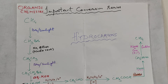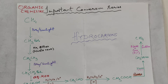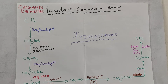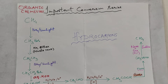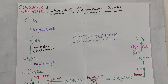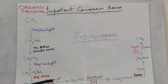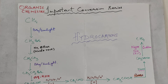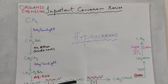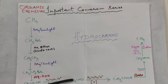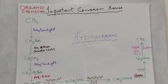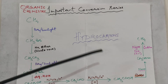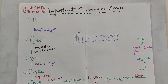Bromoethane is treated with aqueous KOH to give ethanol. Ethanol is oxidized to give acetaldehyde, and acetaldehyde is further oxidized to give acetic acid (ethanoic acid). The oxidizing agent used is potassium dichromate (K₂Cr₂O₇) in acidic medium.